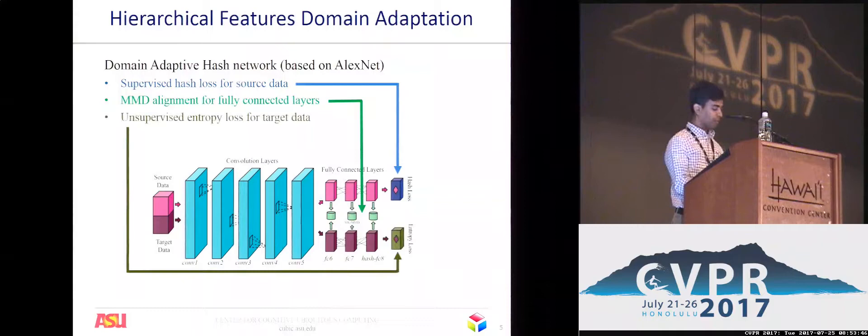The third is a unique loss for the unlabeled target data. The unsupervised entropy loss ensures that a target data point has a hash value which is similar to the hash values of only one of the source categories and is dissimilar to the hash values of the other categories.